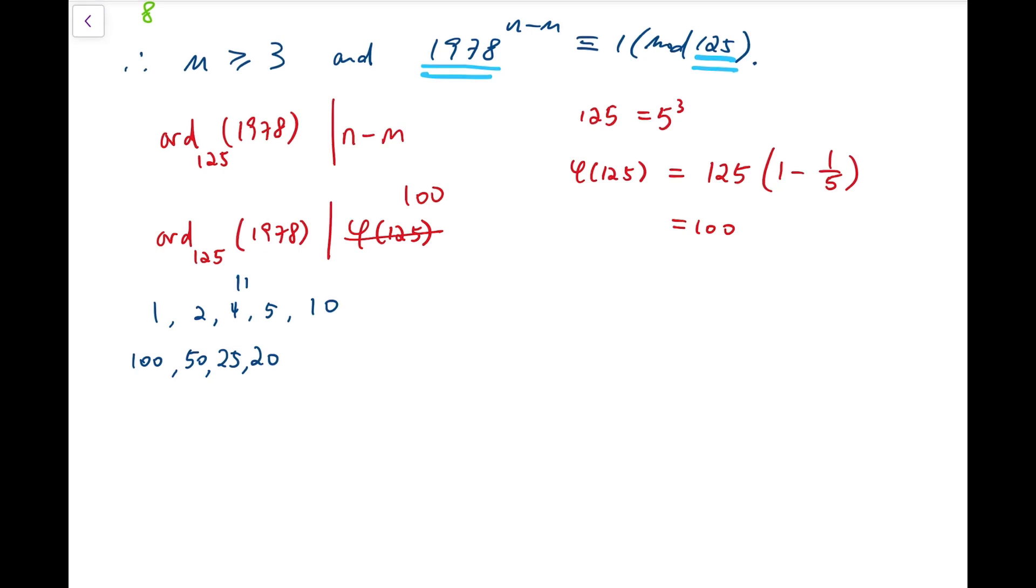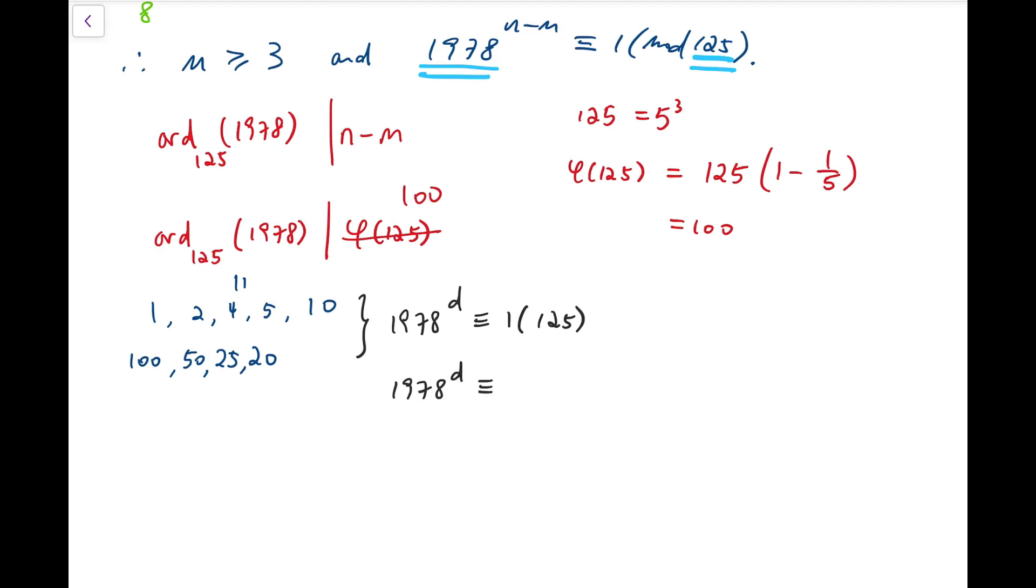Instead of testing all 9 possible values, I'm going to try to further restrict them to even fewer possible cases. To do so, I'm going to consider mod 5, because 125 is 5³, so by knowing that this number to some power, like one of these values, should be congruent to 1 mod 125. I know that, in particular, this order should also, this power, I should say, should also be congruent to 1 mod 5.